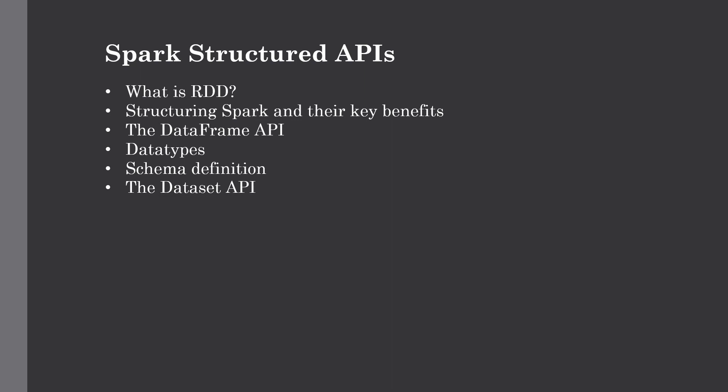Finally, the RDD has a compute function which produces an iterator for the data. However, there are some problems with this original model. The compute function is opaque to Spark — Spark does not know what you are doing with your compute function. Whether you are performing a join, applying a filter, selecting some columns, or doing aggregation, Spark only sees a lambda expression. The iterator data type is also opaque for Python RDDs — Spark only knows it's a generic object.